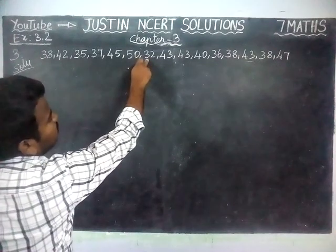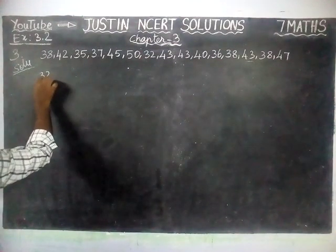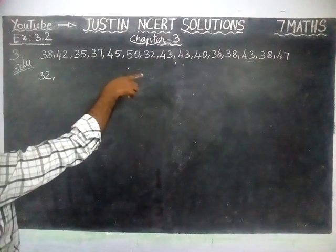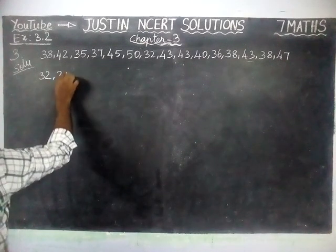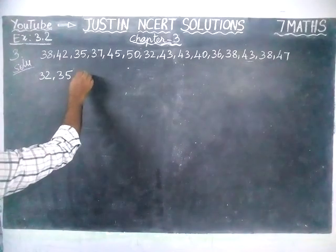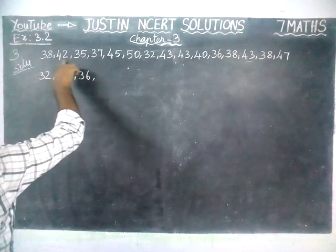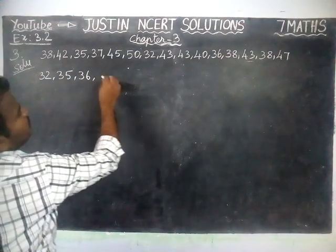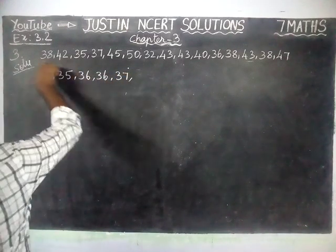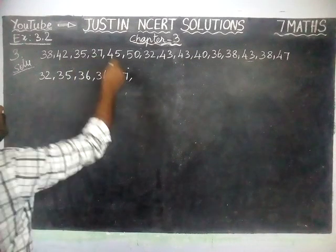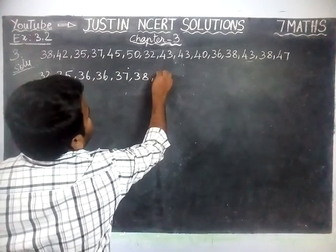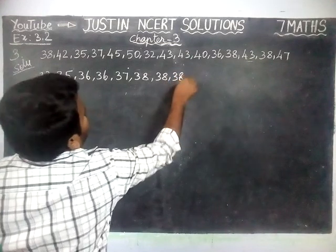Here, the smallest value is 32. 32 appears only one time. Next number, 35 — 35 appears only one time. Next, 36 — 36 appears two times. Then 37 — 37 appears only one time. Next number, 38 — 38 appears one, two, three times.